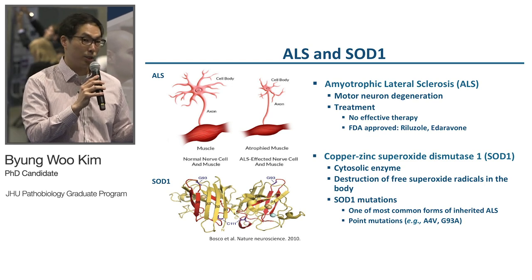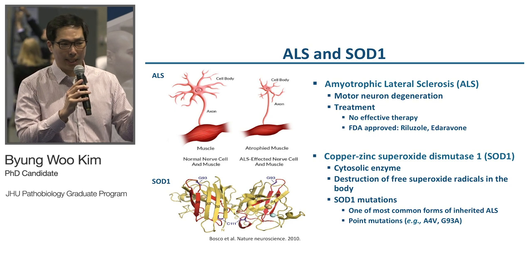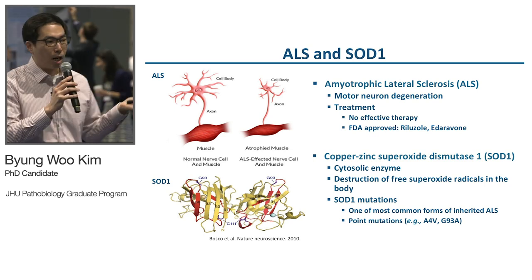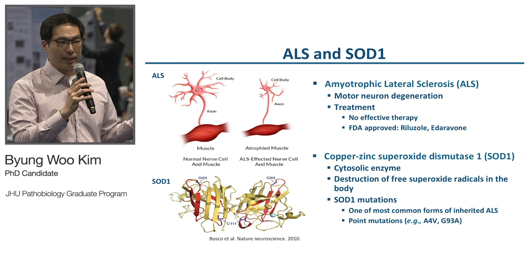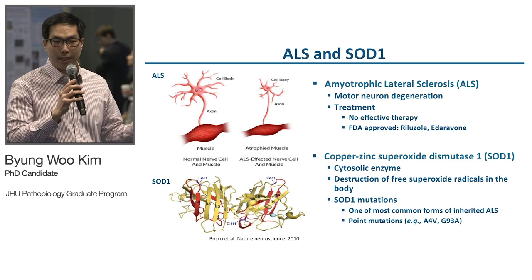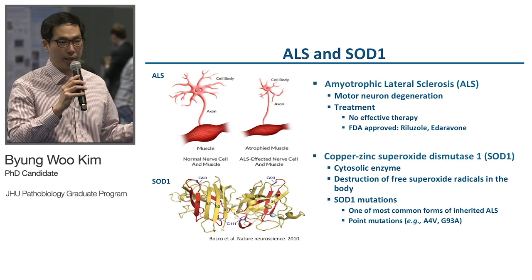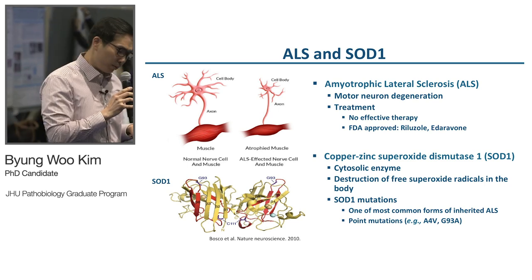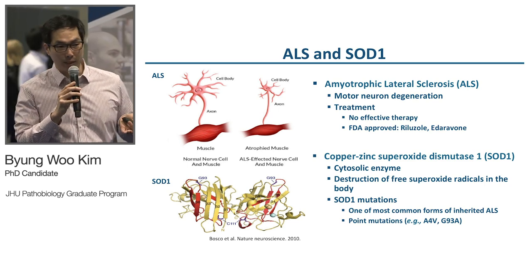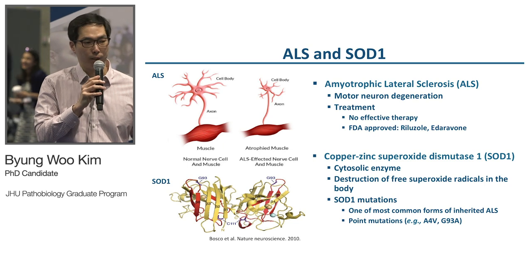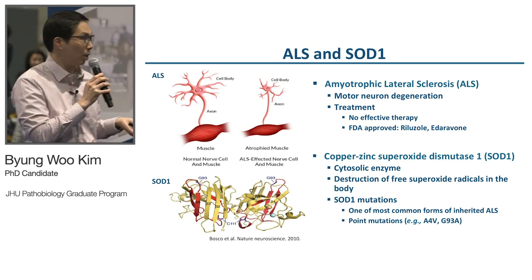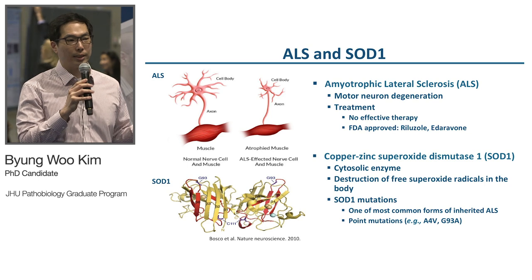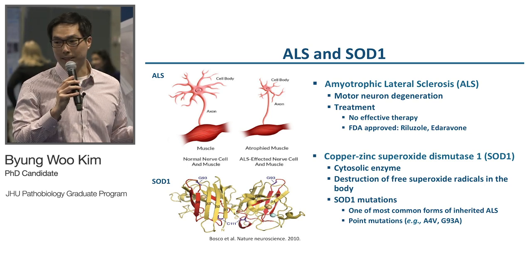In ALS patients, motor neurons selectively and progressively degenerate and die. Because of that, patients' bodies get paralyzed and they end up dying from respiratory failure. This is a very fatal disease. Unfortunately, there's no effective therapy. There are only two FDA-approved drugs, Riluzole and Edaravone, but they only extend lifespan for about three to four months.